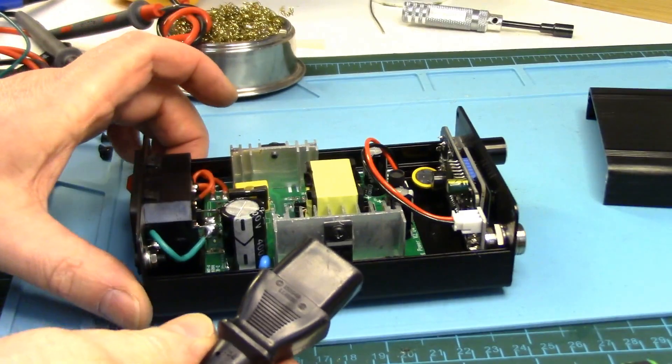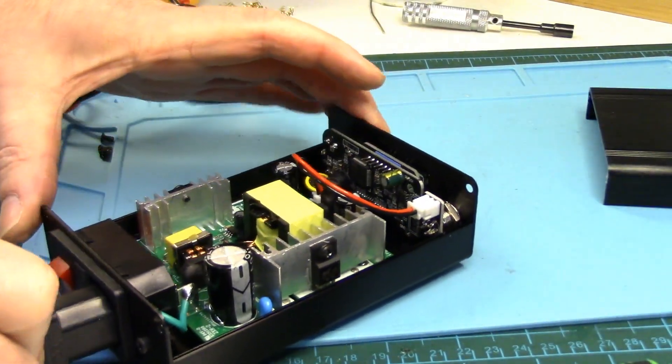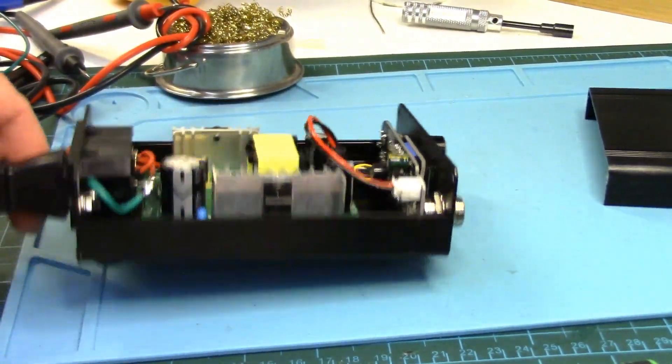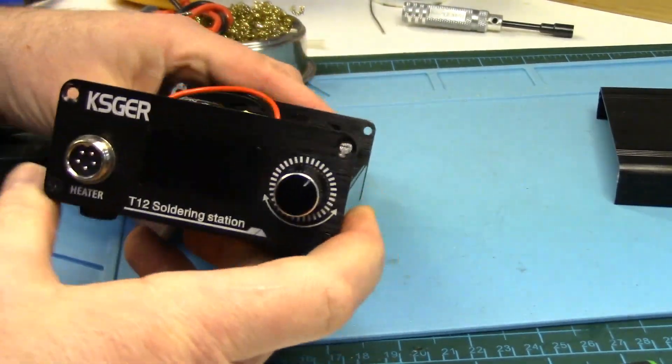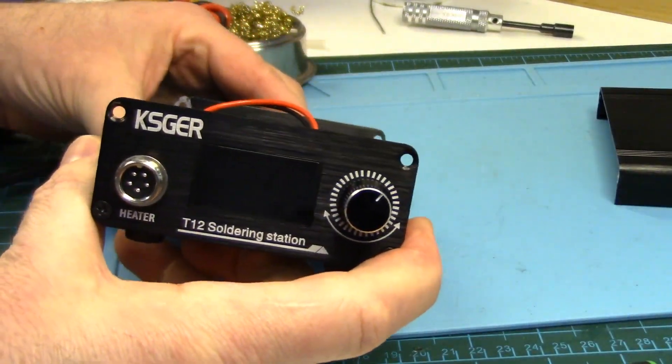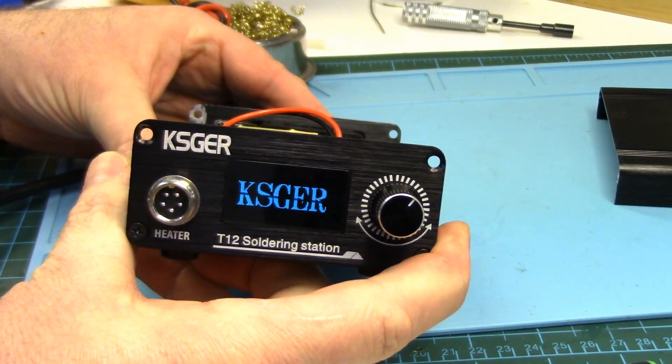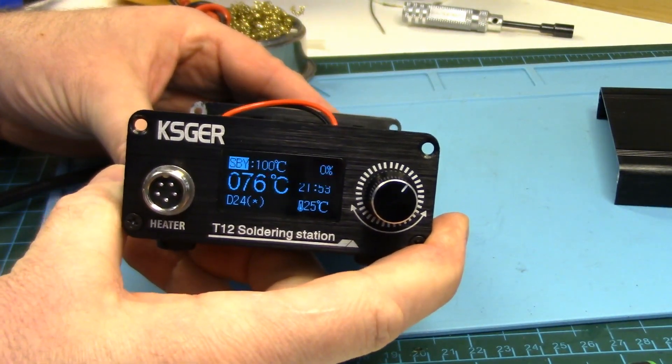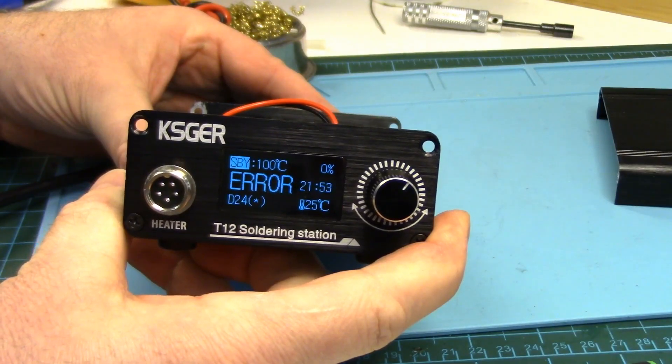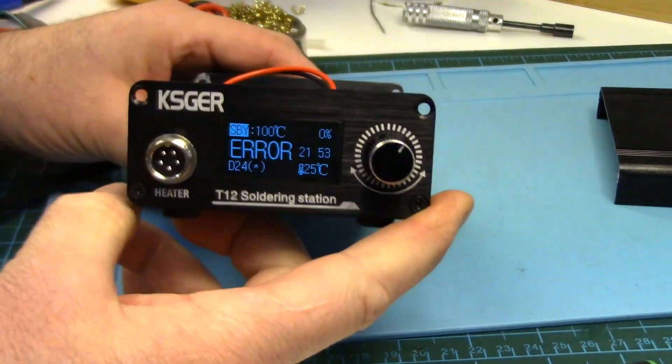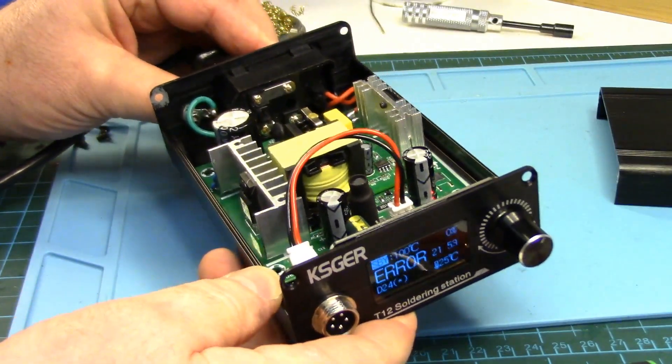And let's just plug it in to make sure it still works. Turn it on. There we go. And of course the error is on because we don't have the iron plugged in but everything's good.